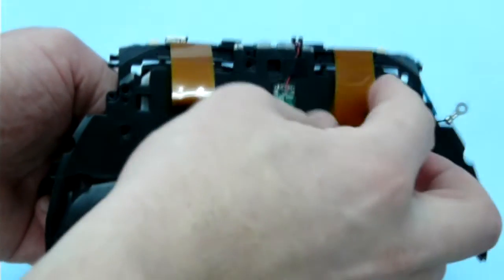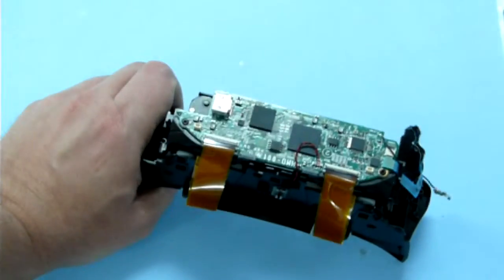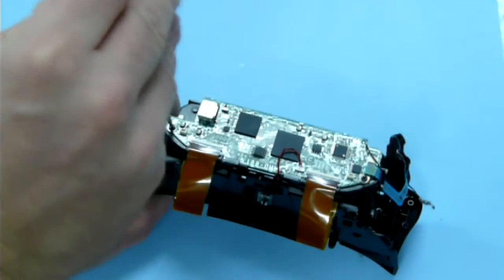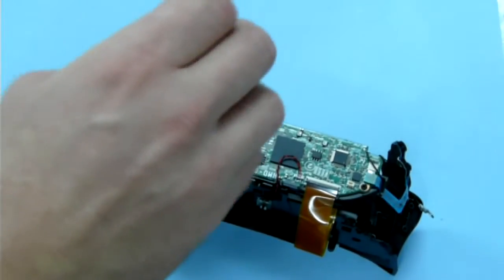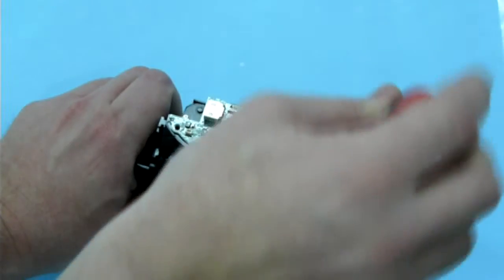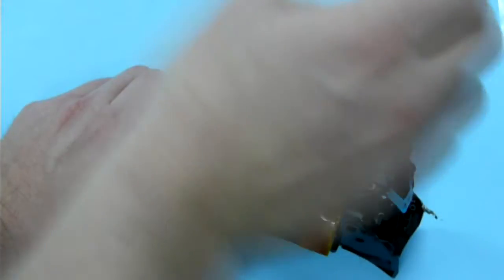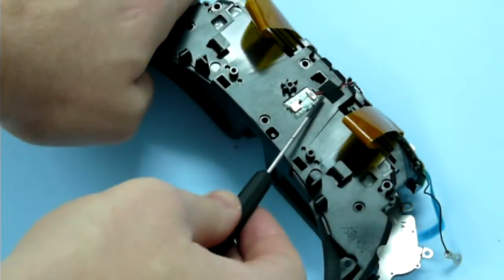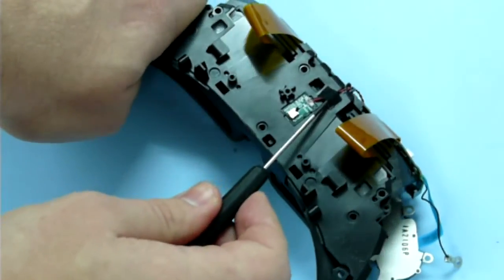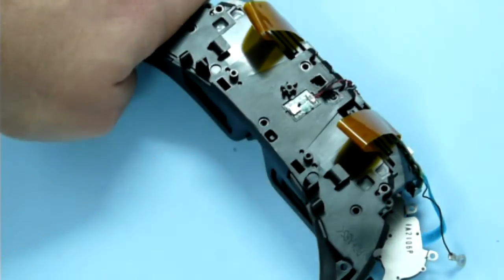Gently pull the OLED wiring from under the hooks. Unscrew the circuit board. Peel one side of the tape holding the wire. There is a screw under it, remove it.